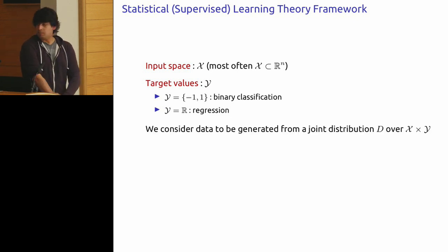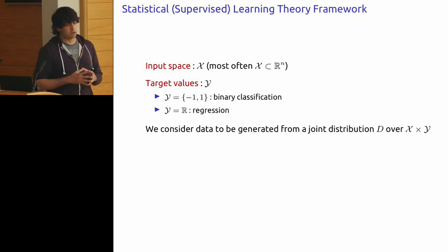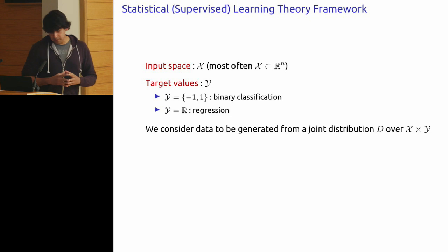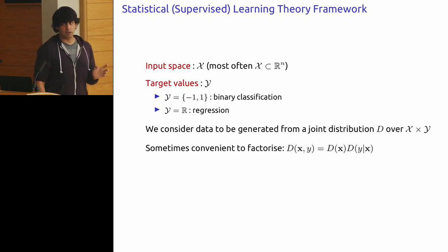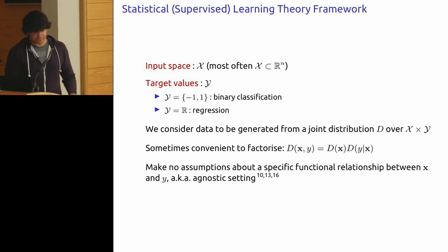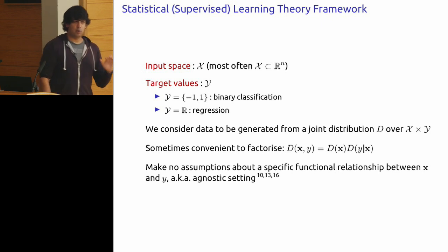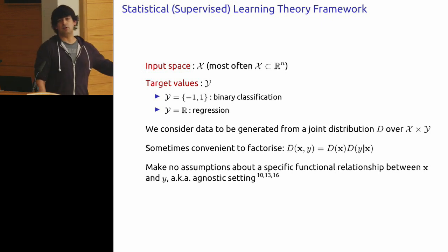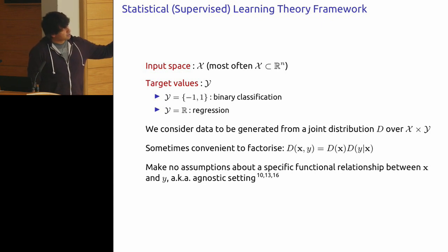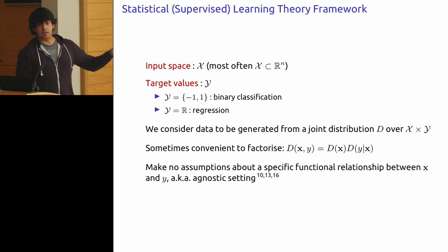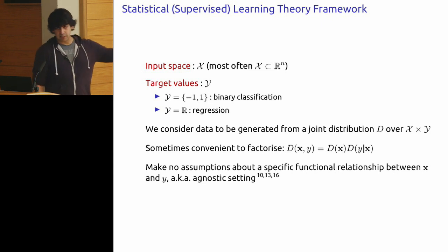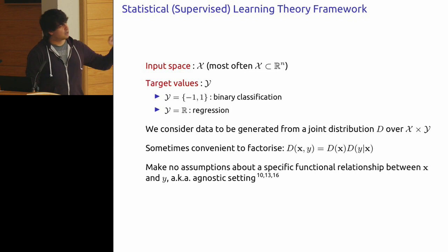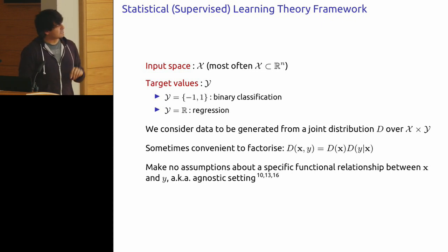I'm going to think of data being generated according to some unknown joint distribution over X cross Y. It will sometimes be convenient to factorize this as a distribution only on X and then the conditional distribution of Y given X. Beyond that, we're going to make no assumptions on how Y and X relate to each other. This is sometimes called the agnostic setting — the original work really goes back to Vapnik and Chervonenkis in the late 60s, early 70s.